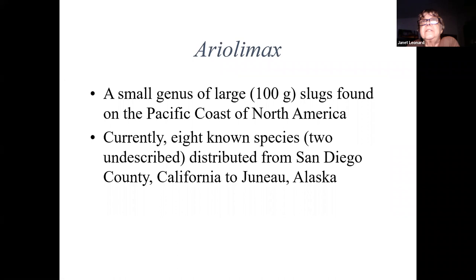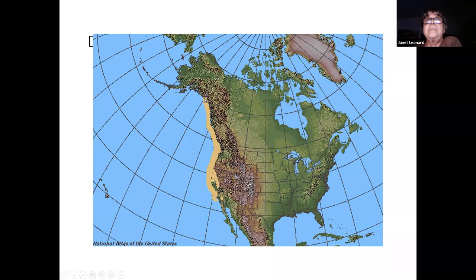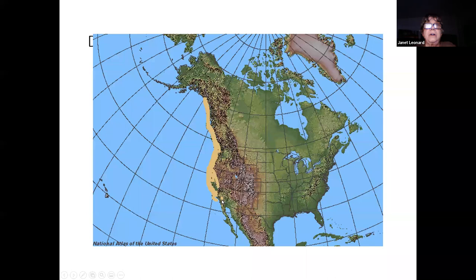To summarize, it's a small genus of large slugs from the Pacific Coast of North America. There are currently eight known species, two of which have yet to be described — we're working on that. Here in yellow we see the distribution. This is about Juneau, Alaska — it goes down the coast, inland to Tuolumne County where Yosemite is, out to the Channel Islands. There's one little isolated population of what we think is a different species in Palomar Mountain State Park in San Diego County — that is an isolated habitat of the temperate rainforest, which is probably why they're there.